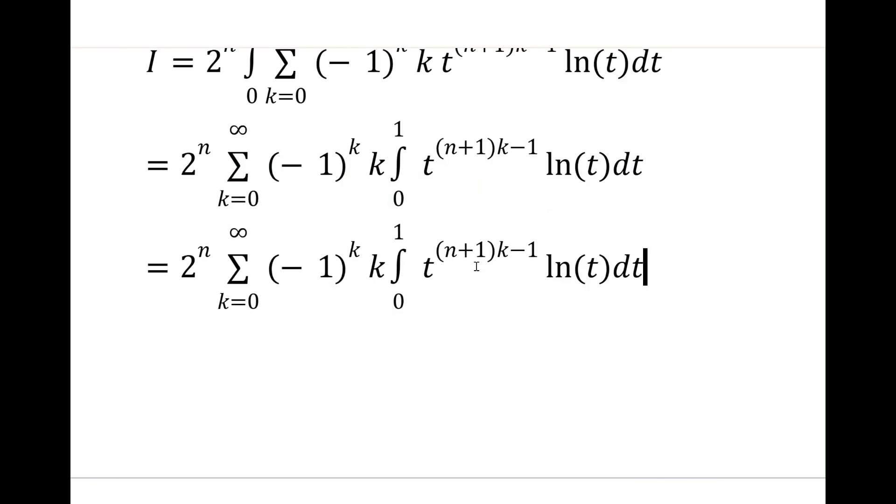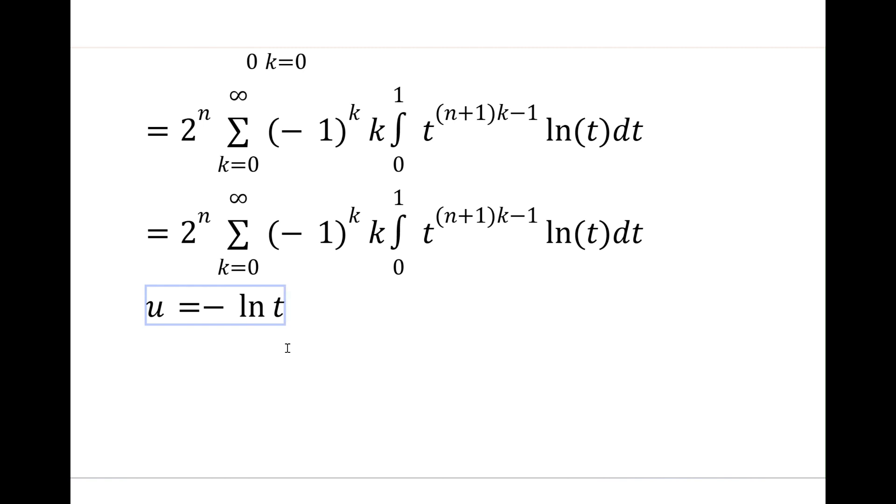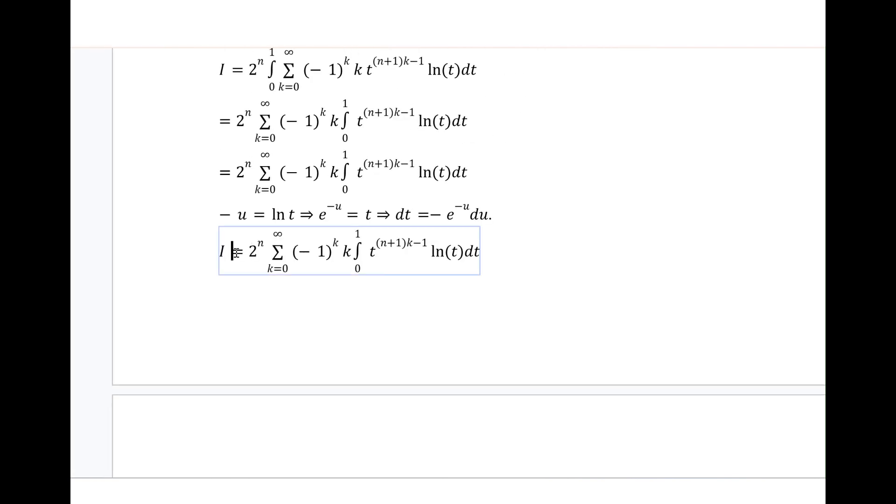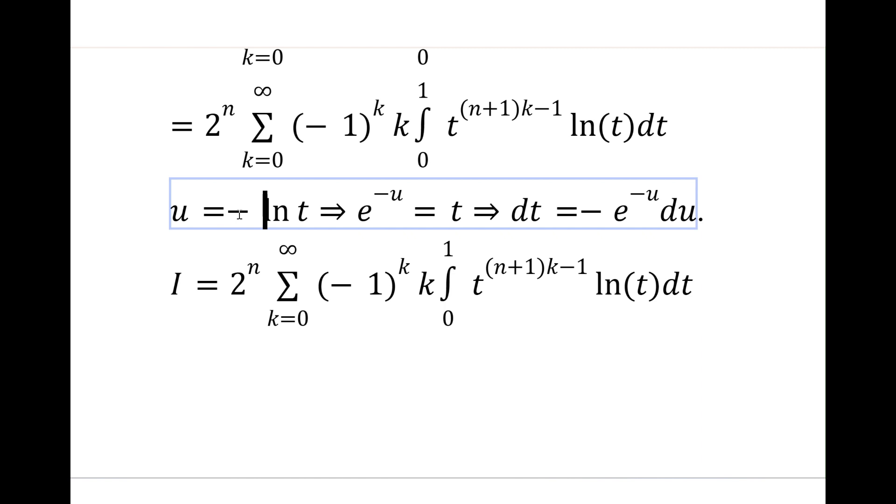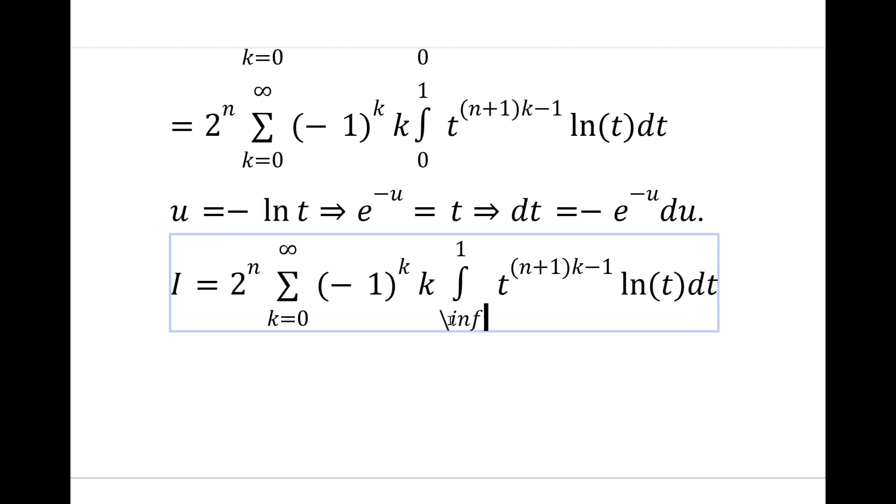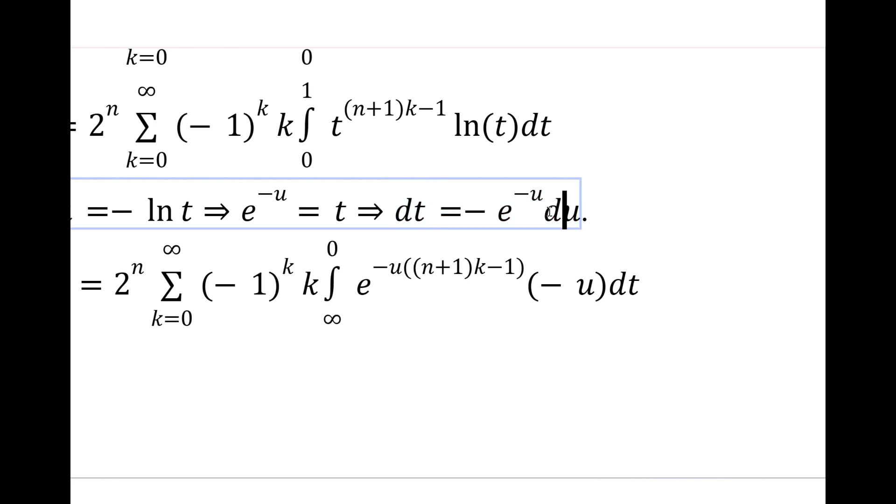This minus 1 to the k times k we'll just take that outside because that's independent of t and then we have this integral to evaluate. You could do integration by parts but it's a bit cooler to do it this way. We're just going to let u equal minus ln t, you'll just see that it works nicer with the bounds. So minus u is ln t and so e to the minus u is just t, and dt is minus e to the minus u du. The bottom bound becomes minus infinity and the top bound is just zero.